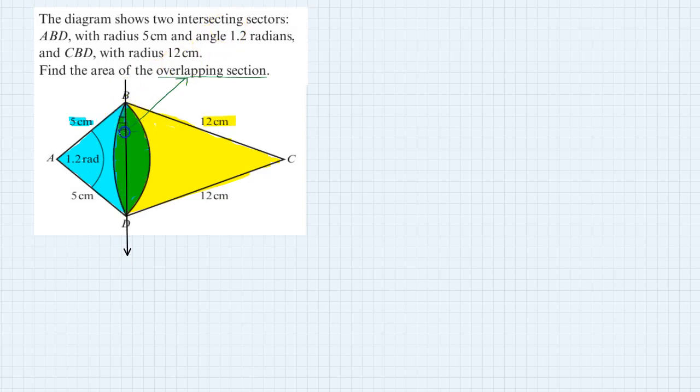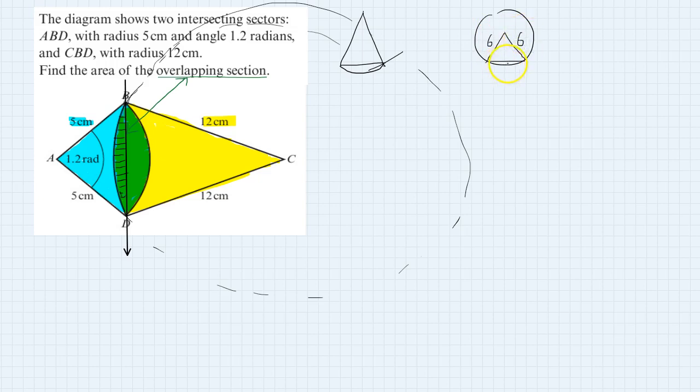This portion is the segment of the bigger circle. This is 6, this is 6, and this is 1.2 radians. We have to calculate this, and this portion is the segment of the circle.